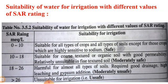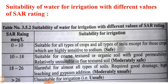If SAR is 10 to 18 milliequivalents per litre, the water is suitable for coarse-textured or organic soil with good permeability, but relatively unsuitable for fine-textured soil — this is moderately safe. When SAR is 18 to 26 milliequivalents per litre, that water is harmful for almost all types of soils, requiring good drainage, high leaching, and gypsum addition.